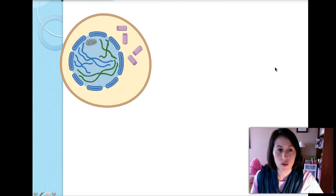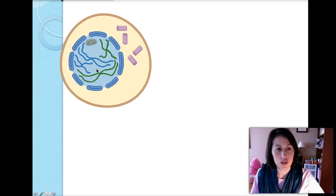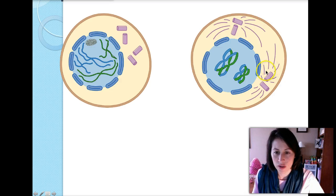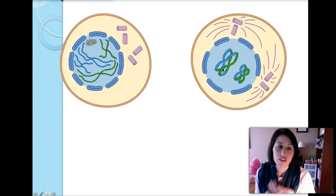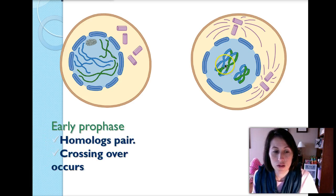In prophase one, the chromosomes are not in any specific order yet but the nucleus is starting to break down. The spindle fibers are starting to form, and importantly, something called crossing over occurs. This is where homologous chromosomes touch and wherever they touch they switch genetic information. We'll talk about that in a little more detail shortly.